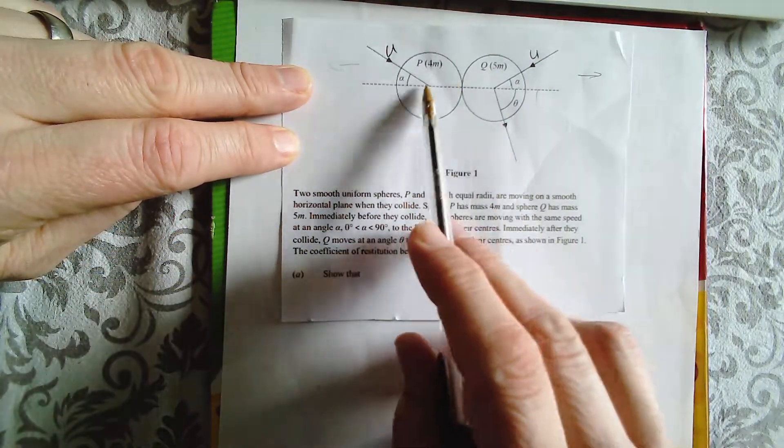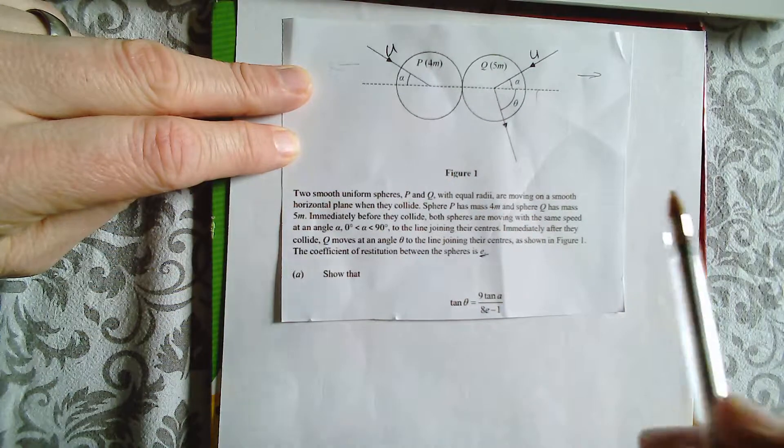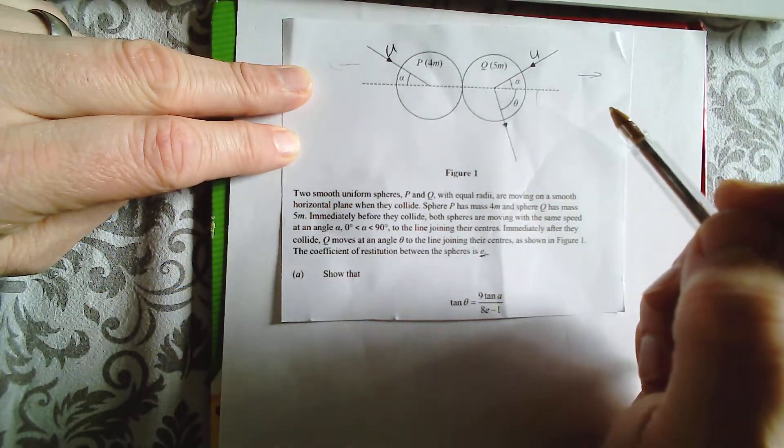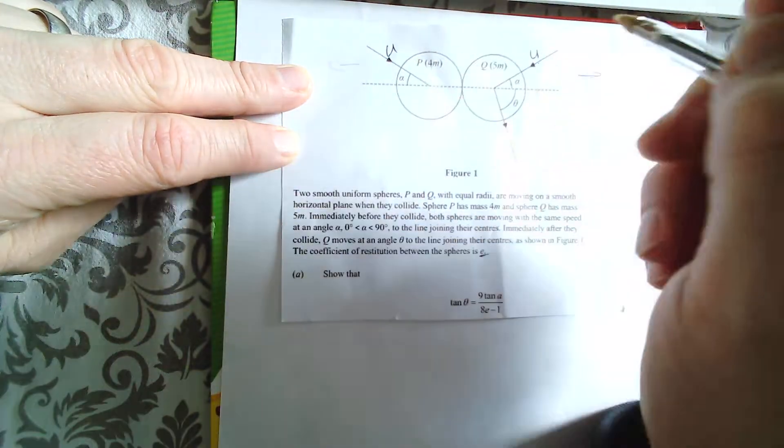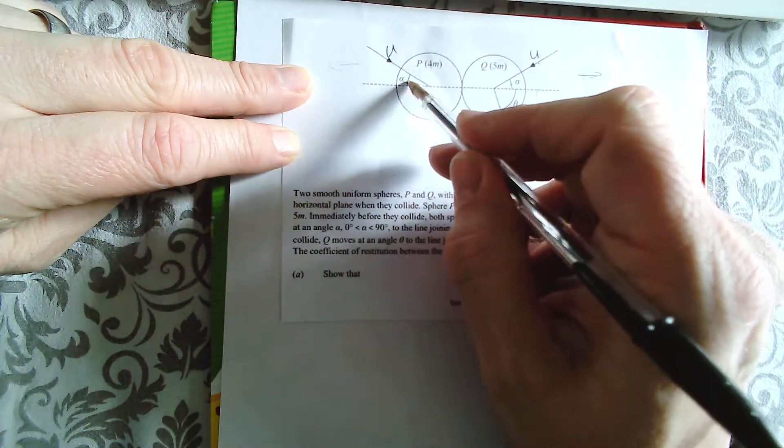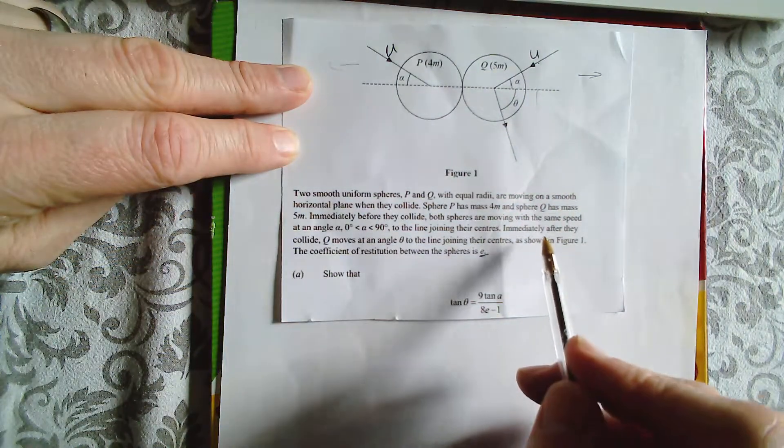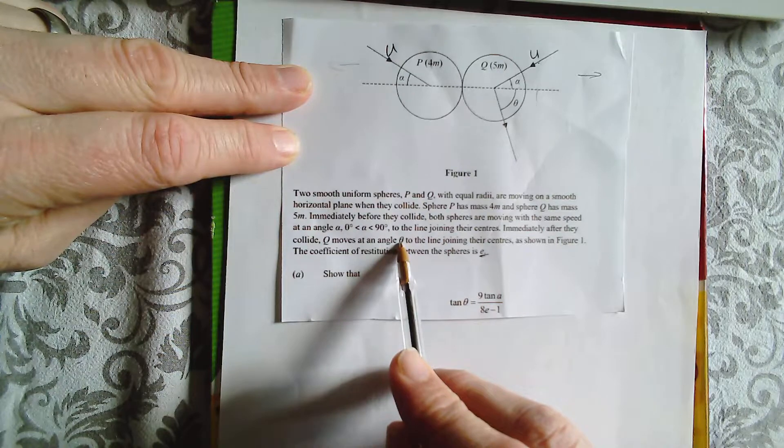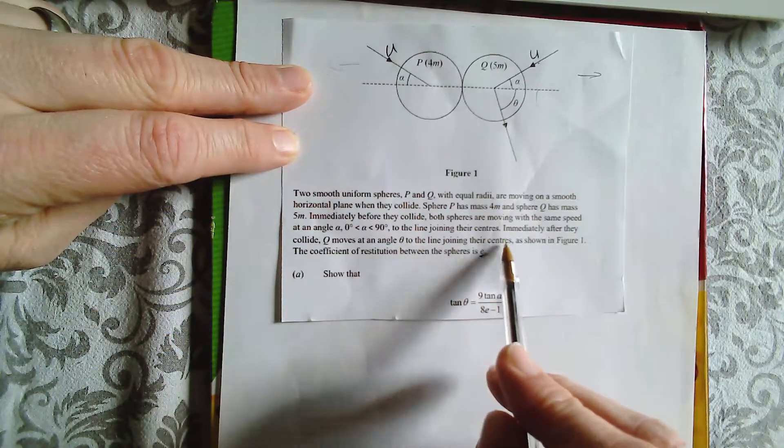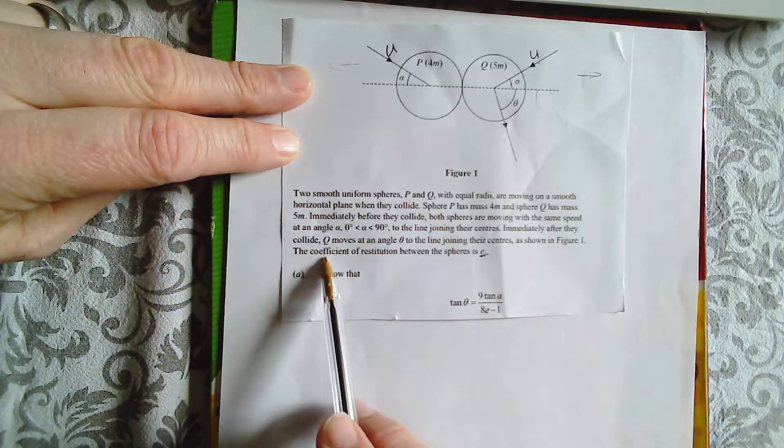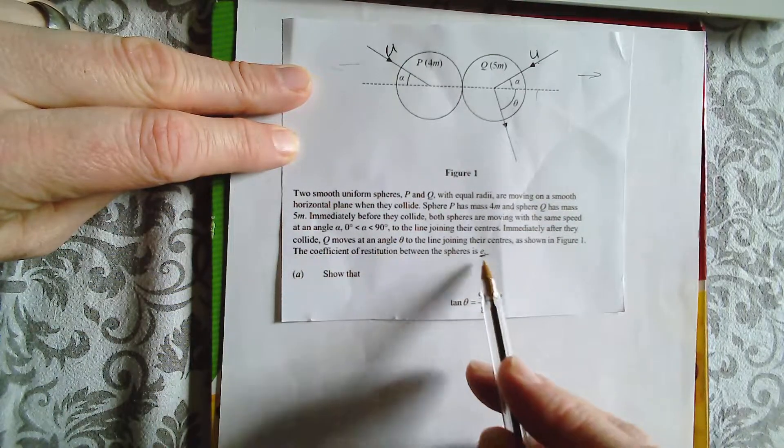They're moving on a smooth, horizontal plane when they collide. Sphere P has a mass of 4m, Q has 5m. Immediately before they collide, the first spheres are moving with the same speed, which we're going to call U, and they make an angle to the line of centres of alpha. Immediately after they collide, Q moves at an angle of theta to the line of centres as shown in figure 1. This is figure 1. The coefficient of restitution between the spheres is E.